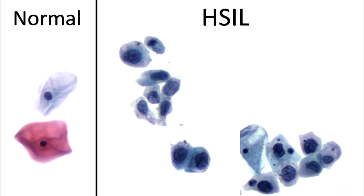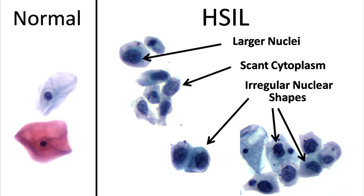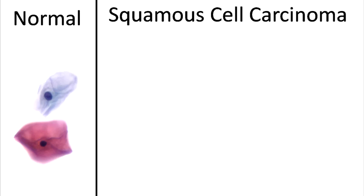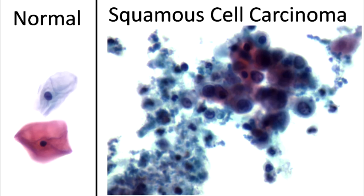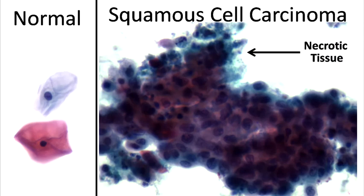High-grade lesions will have larger nuclei, cells with scant cytoplasm, and cells with irregular nuclear shapes. Squamous cell carcinoma has the same kind of cells as those seen in high-grade lesions, but now with necrosis.